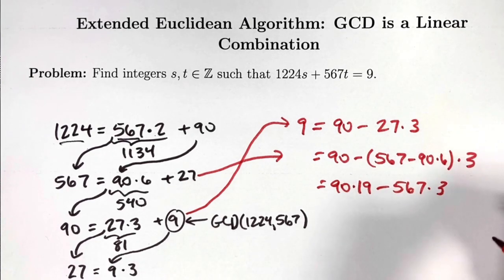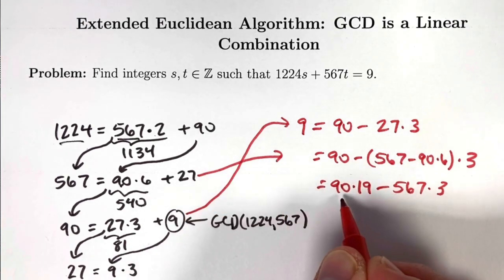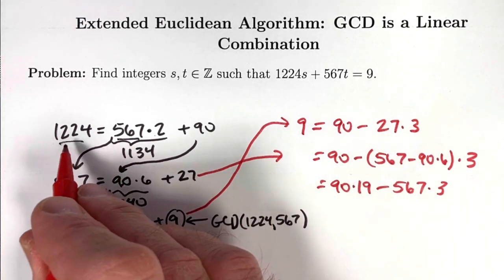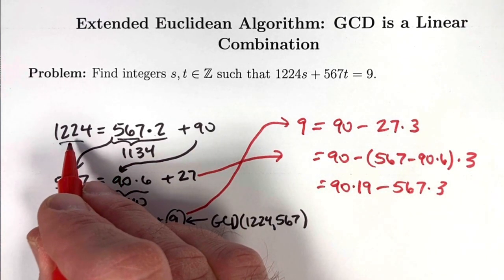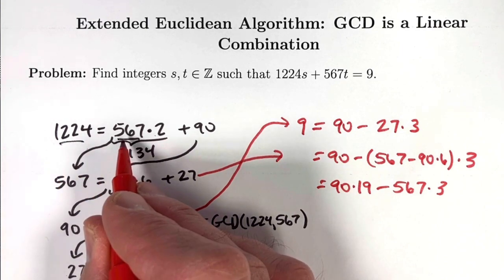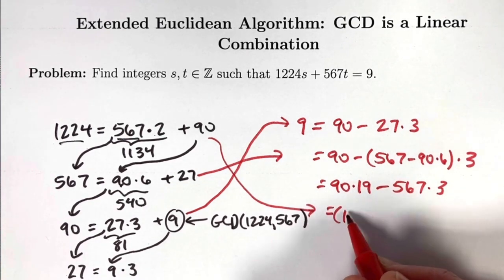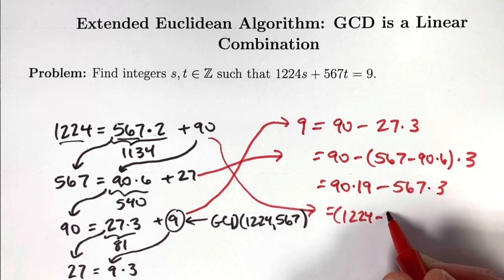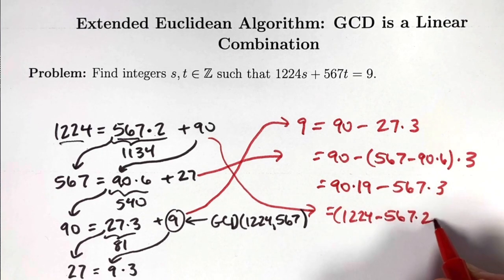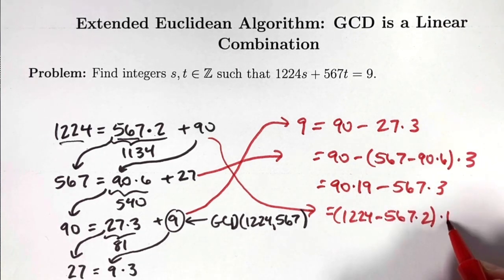We're almost done. We can now use the first equation to replace this 90 as a linear combination of 1224 and 567. And then we can continue simplifying. Go ahead and do so. 90 is 1224 minus 567 times 2. Don't forget to multiply that by 19.